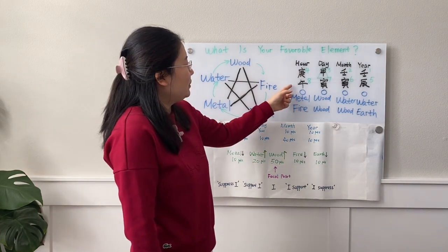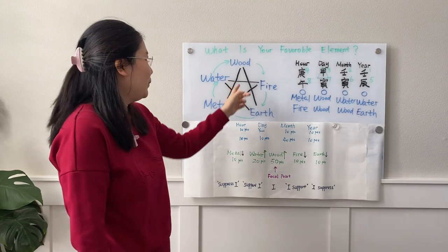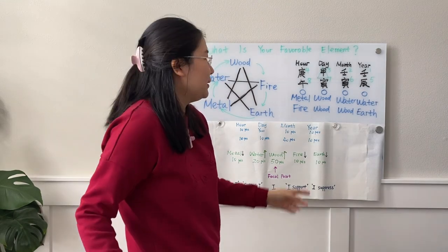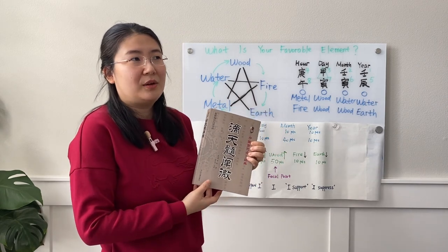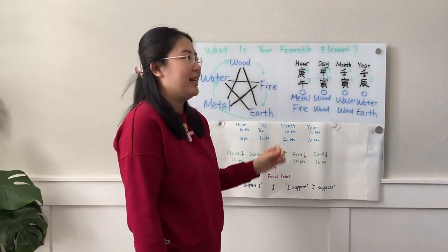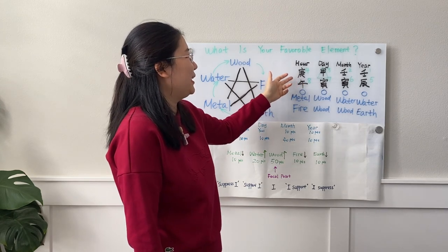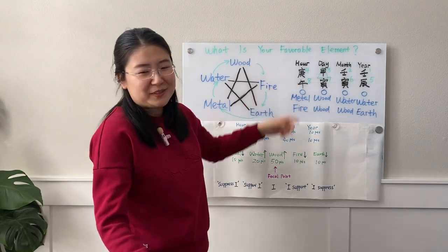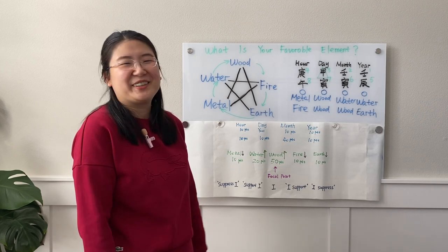Now I'm going to use a case study to explain how, looking at a chart, you find out which element is good versus bad for you. I got this example from an ancient bazi book. I'm strongly against sharing a real person's bazi on the channel without their permission, because if you're good at it, you can translate it into their actual birth time. All the examples in the book are from people who lived 1,000 or 2,000 years ago, so they're no longer with us.